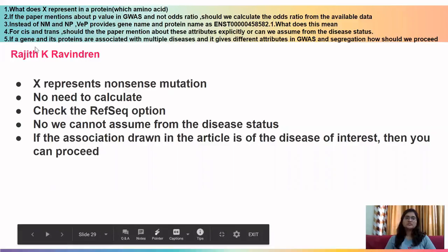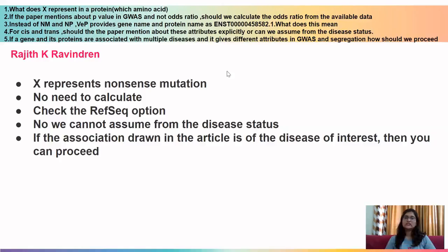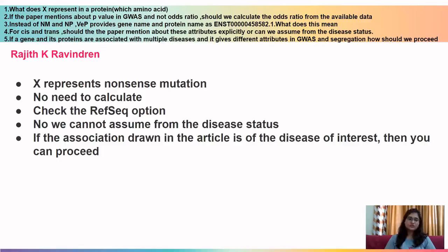The last question from Rajit: if a gene and its proteins are associated with multiple diseases and gives different attributes in GVAS segregation, how to proceed? Even if associated with multiple diseases, if the disease and variant in that particular paper match your interest, look at the article. If the disease is not of interest — such as something unrelated like Mensfat — ignore such articles. Refer only to articles where both the variant and the disease are of your interest.